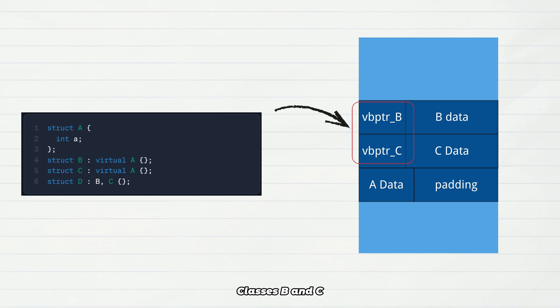Classes B and C no longer directly contain the A sub-object. Instead, each of them gets an additional virtual base class pointer. The A sub-object is extracted and placed at the end of the object, becoming a shared resource for all virtually inherited classes.